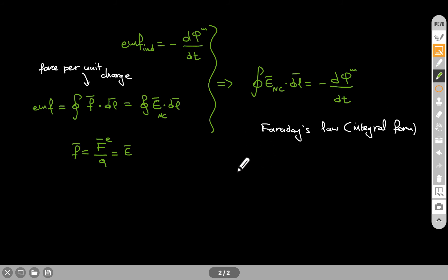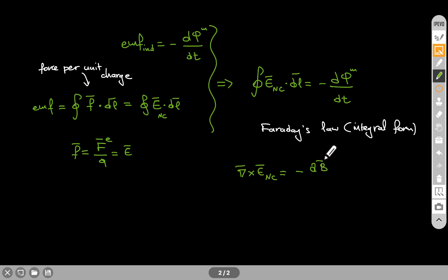We can also write Faraday's law in the differential form: the curl of the non-Coulomb electric field equals minus the partial derivative of B with respect to time. This is Faraday's law in the differential form.